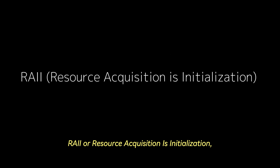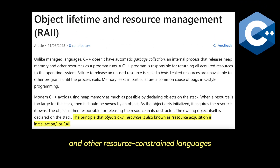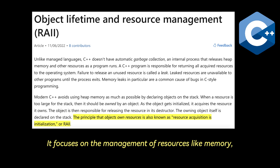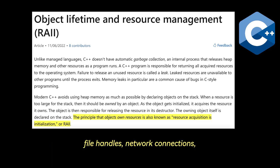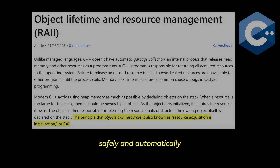RAII, or Resource Acquisition Is Initialization, is a programming concept used primarily in C++ and other resource-constrained languages. It focuses on the management of resources like memory, file handles, network connections, in a way that ensures they are acquired and released safely and automatically.